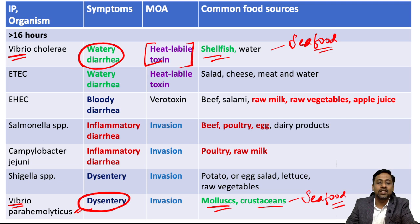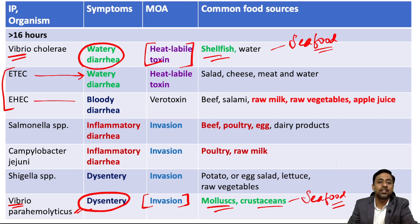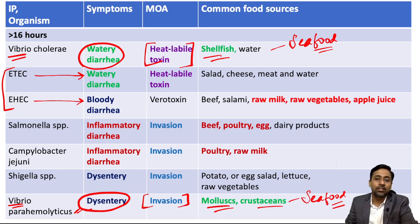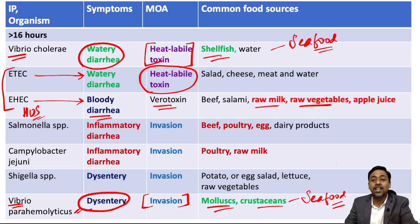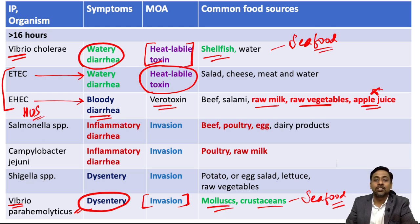For E. coli: enterotoxigenic E. coli (ETEC) leads to watery diarrhea via toxin production (LT or ST), while enterohemorrhagic E. coli (EHEC) leads to bloody diarrhea by invasion. EHEC may also lead to hemolytic uremic syndrome in children and is caused by verocytotoxin. The characteristic food sources for EHEC are raw milk, raw vegetables, and apple juice — apple juice being a unique identifier not seen with other agents.